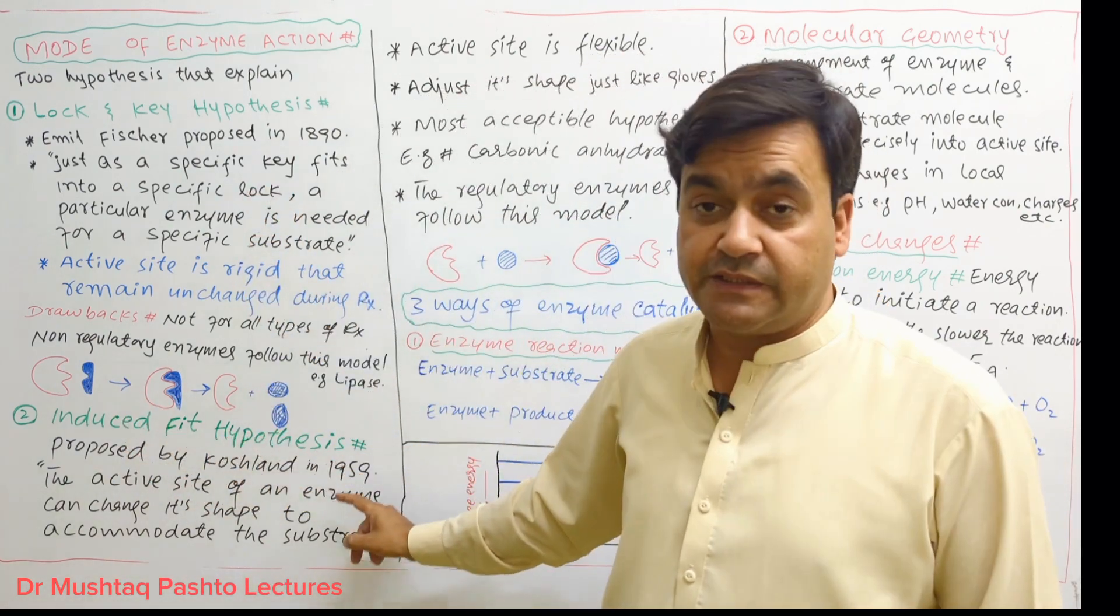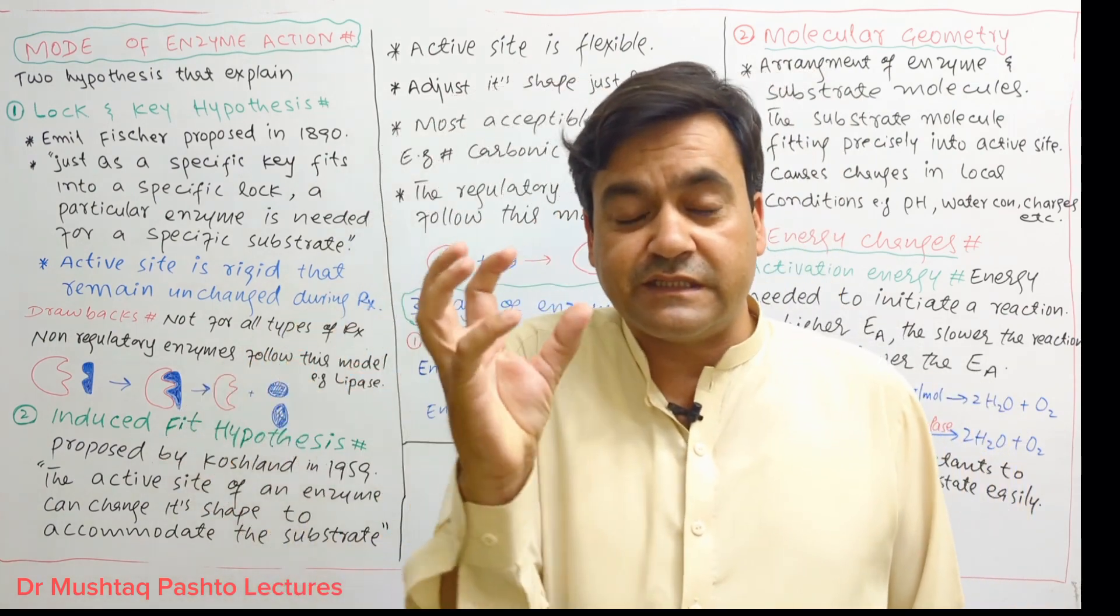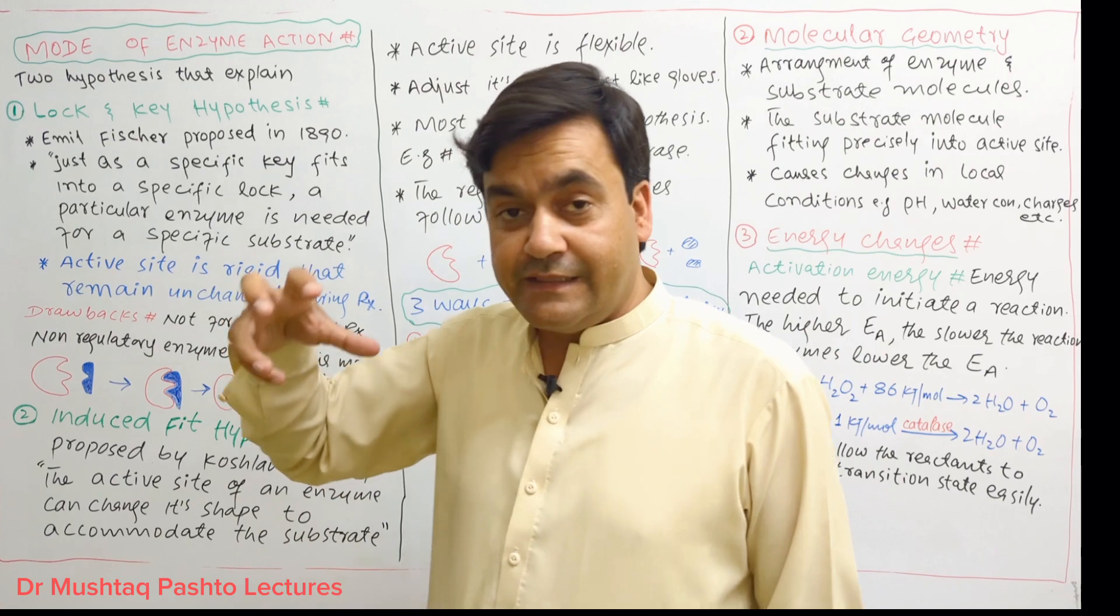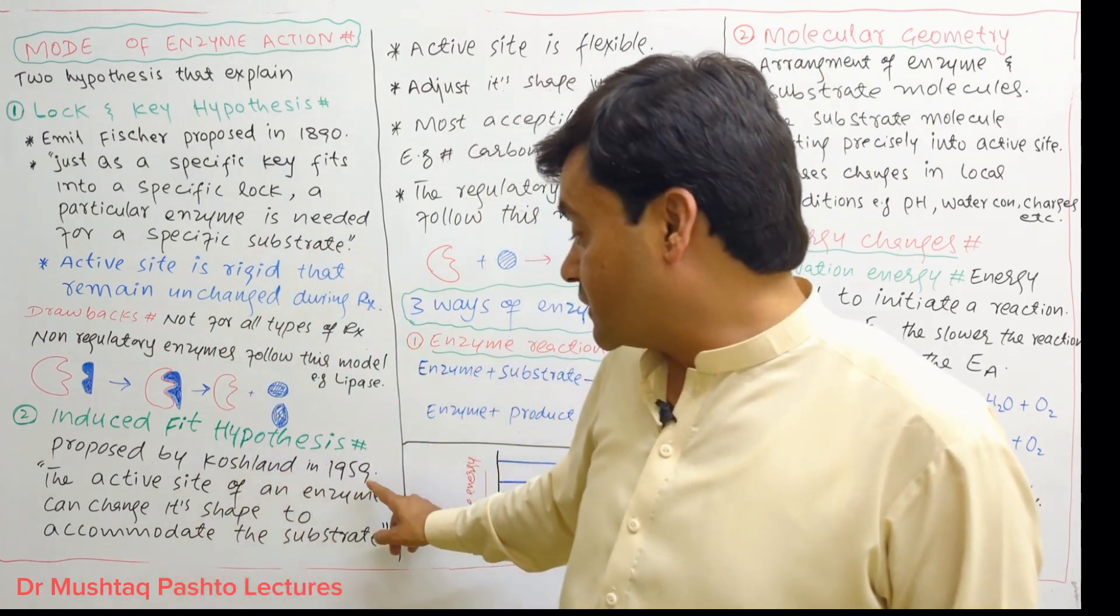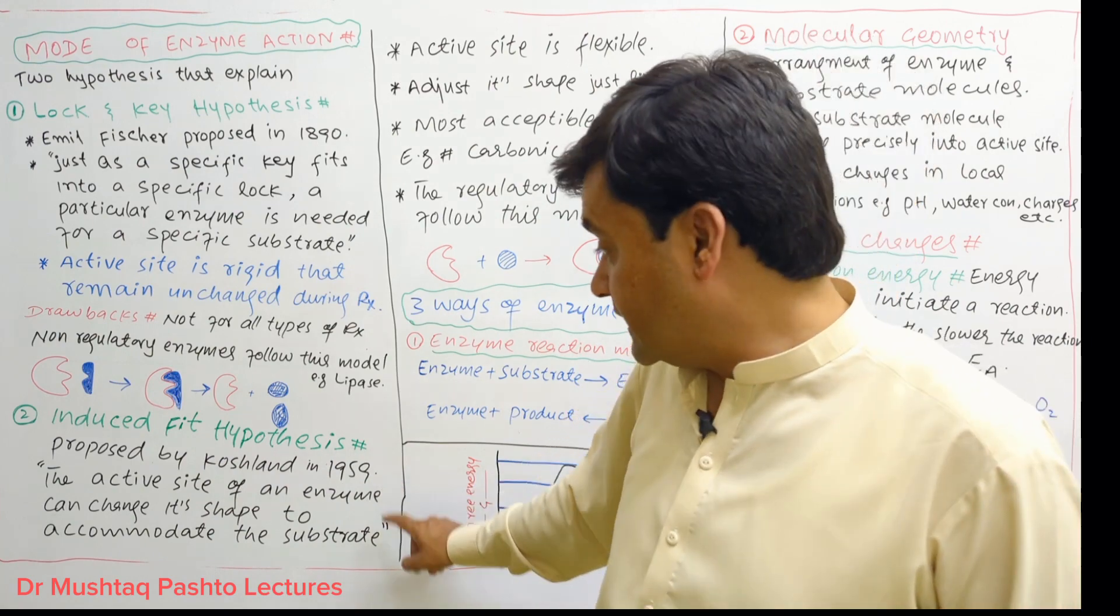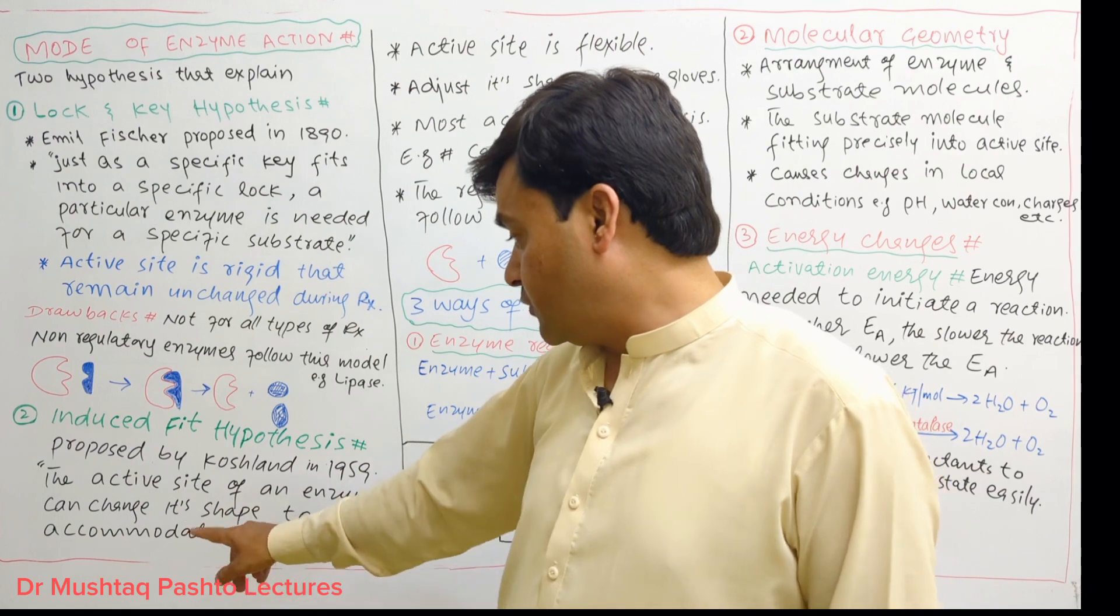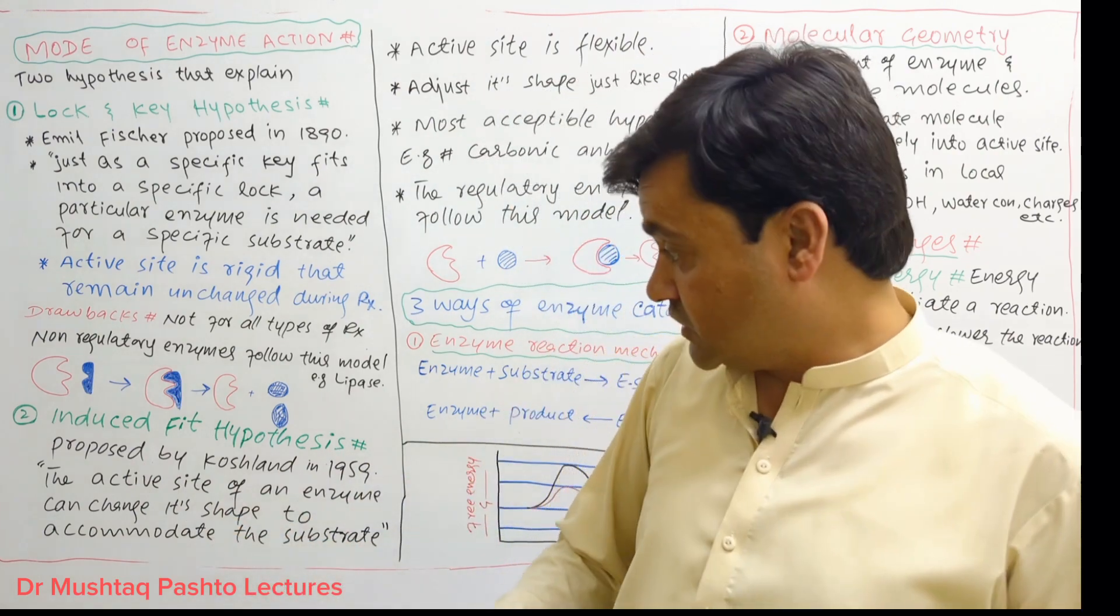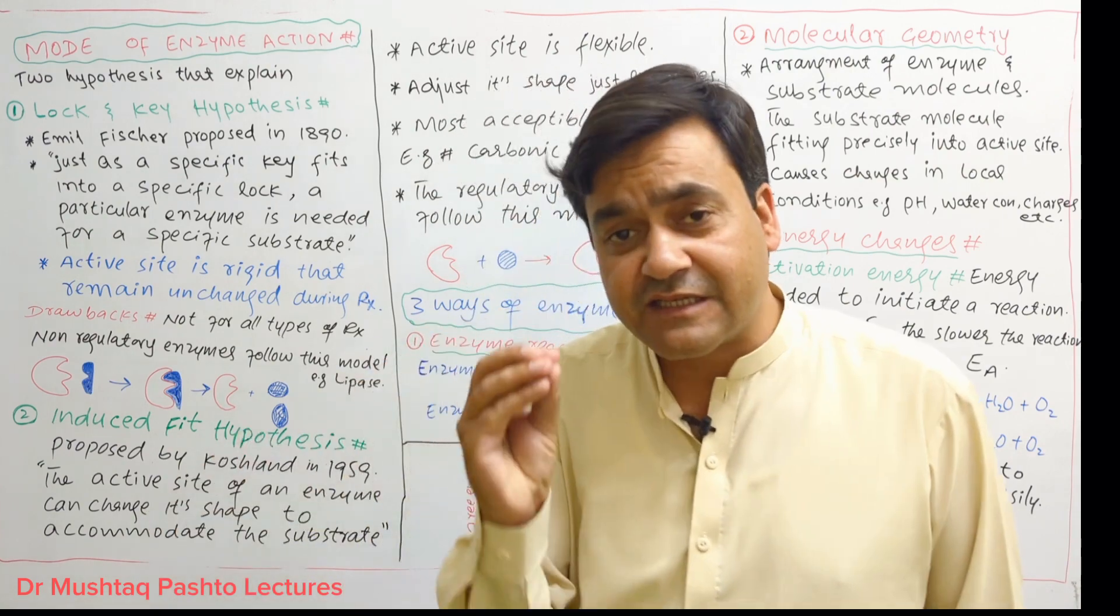The second model is the induced fit hypothesis, which was proposed by Koshland in 1959. According to this model, the active site of the enzyme can change its shape to accommodate the substrate. The active site is slightly changed to accommodate the substrate.